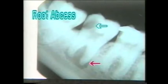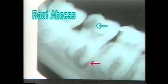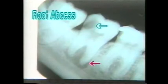Root abscess is an osteolytic lesion around the root of a tooth. The red arrow points to the circular area of bone destruction around the root of this tooth, and the white arrow points to the caries with destruction of the crown of the tooth, forming a radiolucent cavity within the tooth.